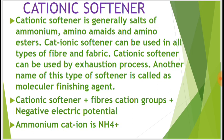Cationic softener — cationic softener generally consists of salts of ammonium, amino amides, and amino esters. Cationic softener can be used in all types of fiber and fabric, and can be applied by the exhaustion process. Another name for this type of softener is called a molecular finishing agent. Cationic softener gives fiber cation groups.